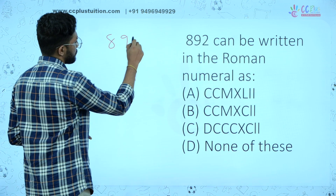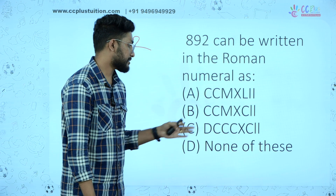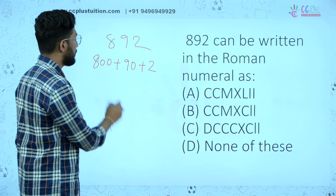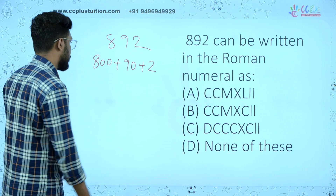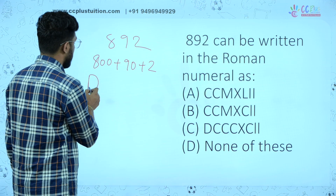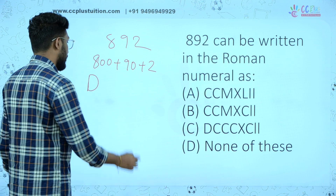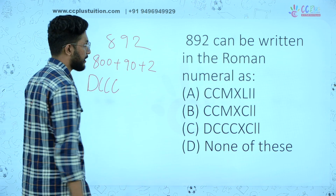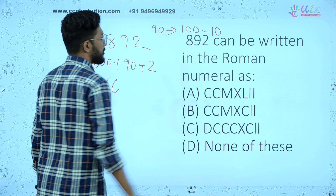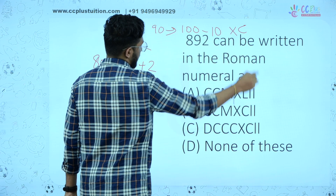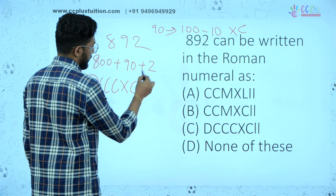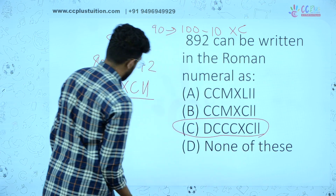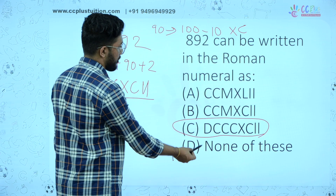Next question: 892 can be written in Roman numeral. We have 800 plus 90 plus 2. How do we write 800? D is 500. So 800 is DCCC (500 plus 300: 600, 700, 800 — D plus CCC). 90 is XC (100 minus 10). How do we write 90? 100 minus 10 is XC. Then we write DCCC, XC — the answer is DCCCXCII. Correct answer is option C.